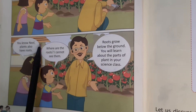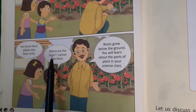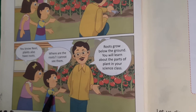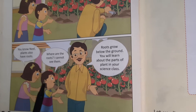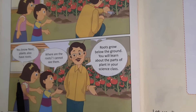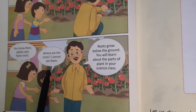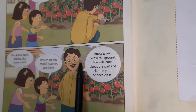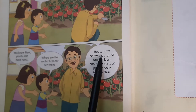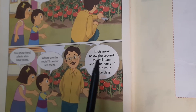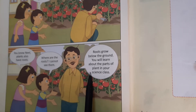You know Neil, plants also have roots. Where are the roots? I cannot see them. A child's sister says, Neil, do you know plants have roots? Neil says, but I don't see them. Then the father tells the children: roots grow below the ground. You will learn about the parts of a plant in your science class.